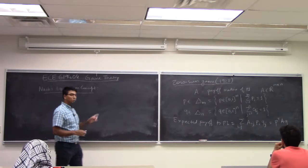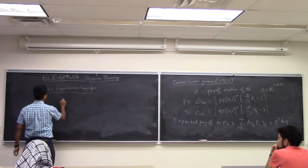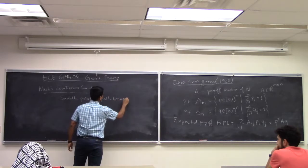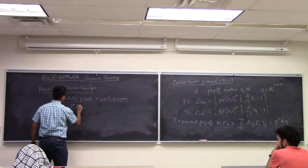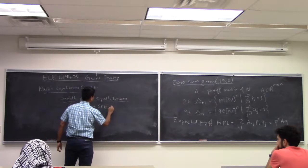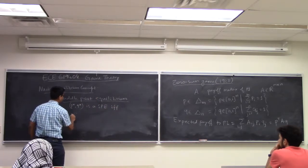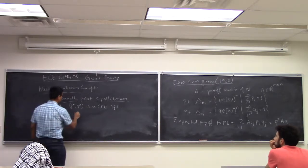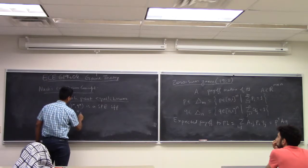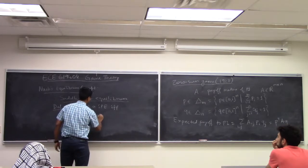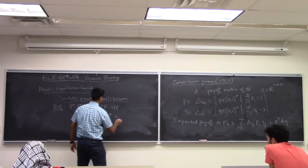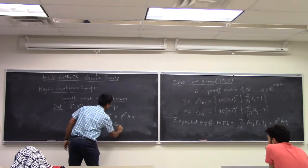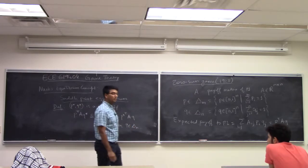So what von Neumann suggested is known as saddle point equilibrium, which is that P star Q star is a SPE if and only if, I mean this is the definition by the way. So don't get confused by if and only if. Whenever you have a definition you always write it as if and only if. P transpose A Q star is less than equal to P star transpose A Q star less than equal to P star transpose A Q, for every P in delta M, Q in delta N.